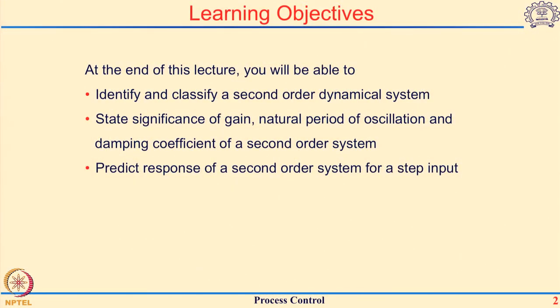At the end of this part of the lecture, the objectives are that you should be able to identify as well as classify a second order dynamical system. For second order systems there are three parameters: the process gain, the natural period of oscillation, and the damping coefficient. You should be able to tell the significance of each of those for the system at hand, and lastly, you should be able to predict how a second order system responds to a step change.